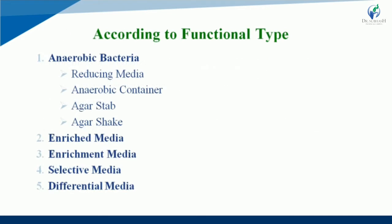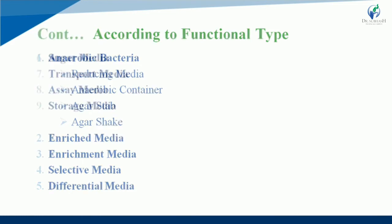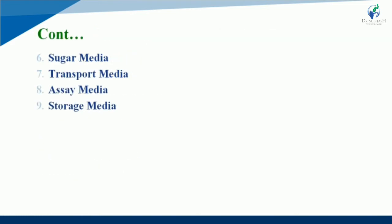According to functional type, the first category is anaerobic bacteria. Anaerobic bacteria have four subtypes: reducing media, anaerobic container, agar stab, and agar shake. Second is enriched media, third is enrichment media, next is selective media, and last is differential media. Sugar media, transport media, ocean media, and storage media are also types of functional category.